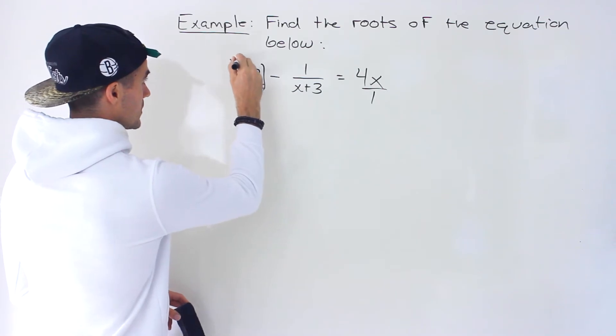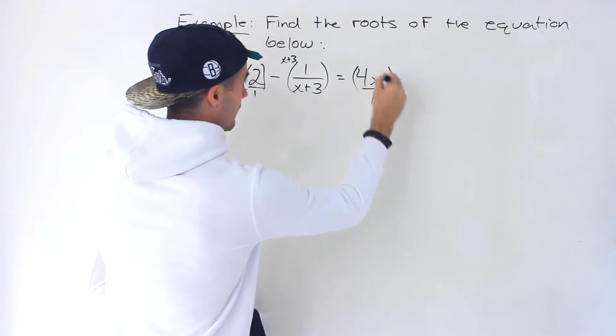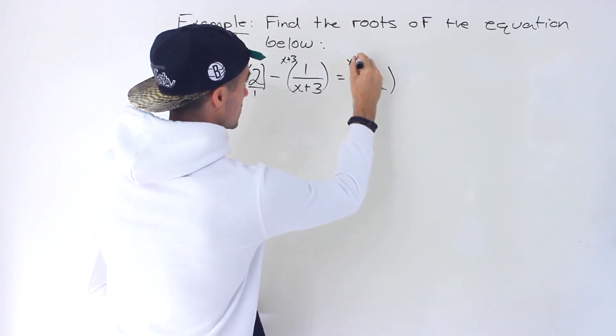So we would multiply this by x plus 3. This by x plus 3. So the x plus 3s cancel out. And then this by x plus 3.